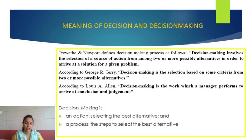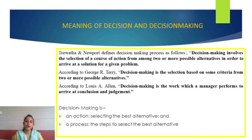The process of making a decision is called the decision making process. Trivatha and Newport define it as: decision making involves the selection of a course of action from among two or more possible alternatives in order to arrive at a solution for a given problem. According to George R. Terry, decision making is the selection based on some criteria from two or more possible alternatives. According to Lewis A. Allen, decision making is the process which a manager performs to arrive at a conclusion and judgment.